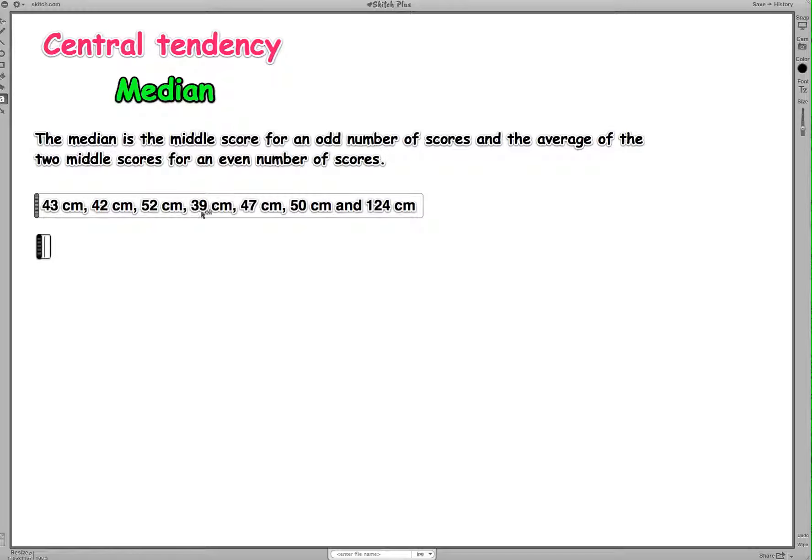So the lowest is 39, then we've got 42. I'm just ranking these in order from lowest to highest. We've got, what's next, 43, 47, 50, and 52, and then our big fish at the end of 124. So just 1, 2, 3, 4, 5, 6, 7, that's right, and they're from lowest to highest.